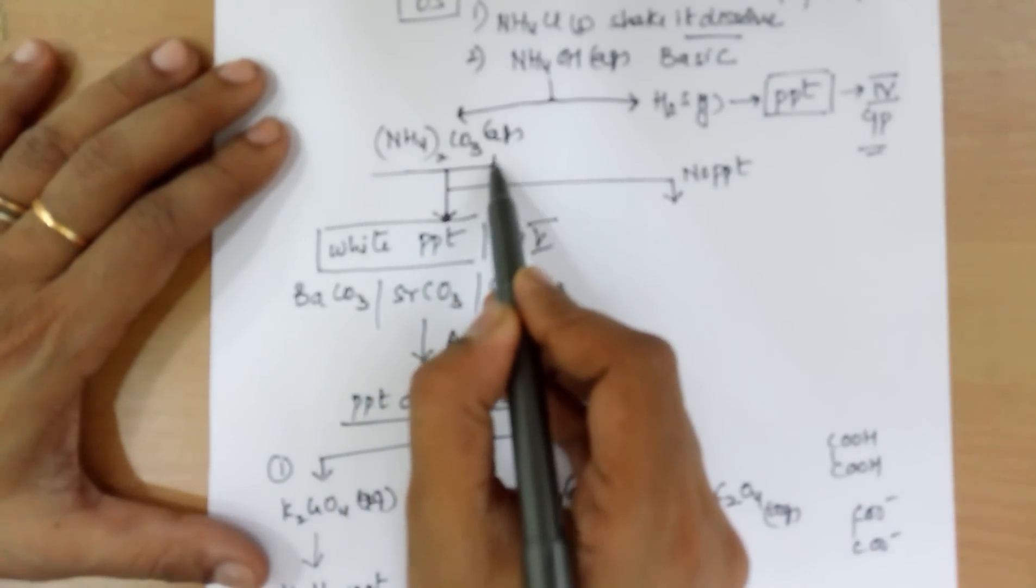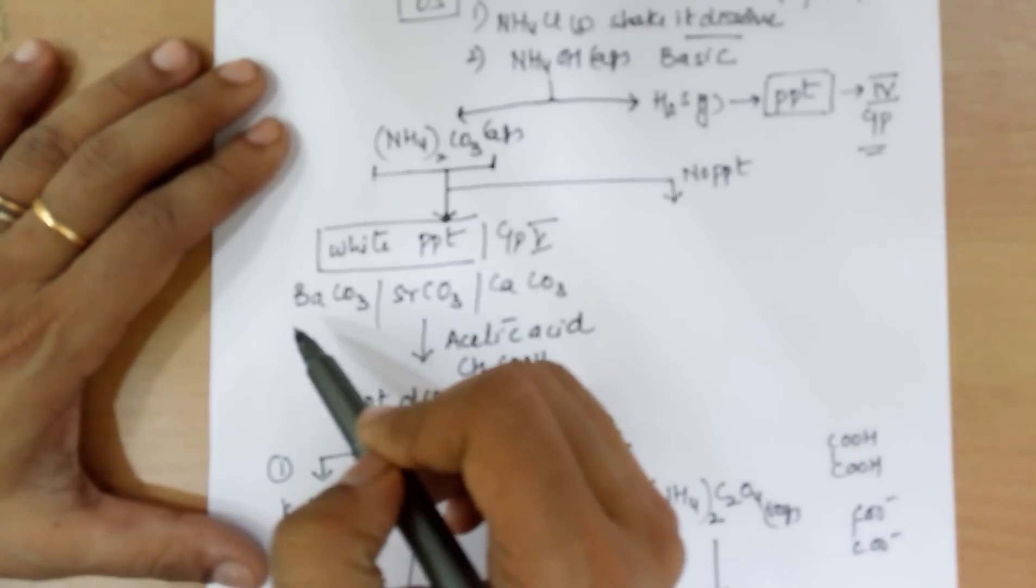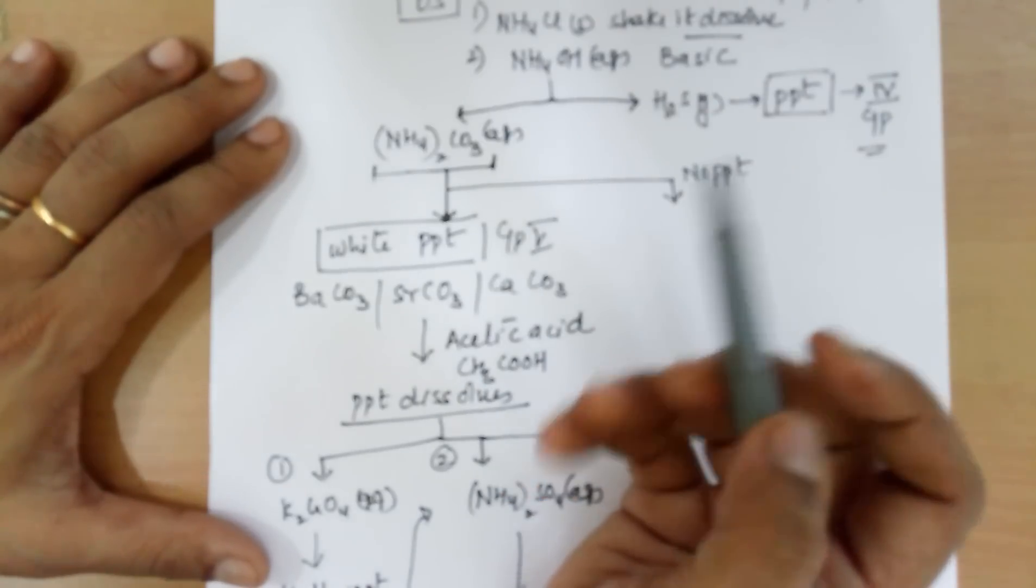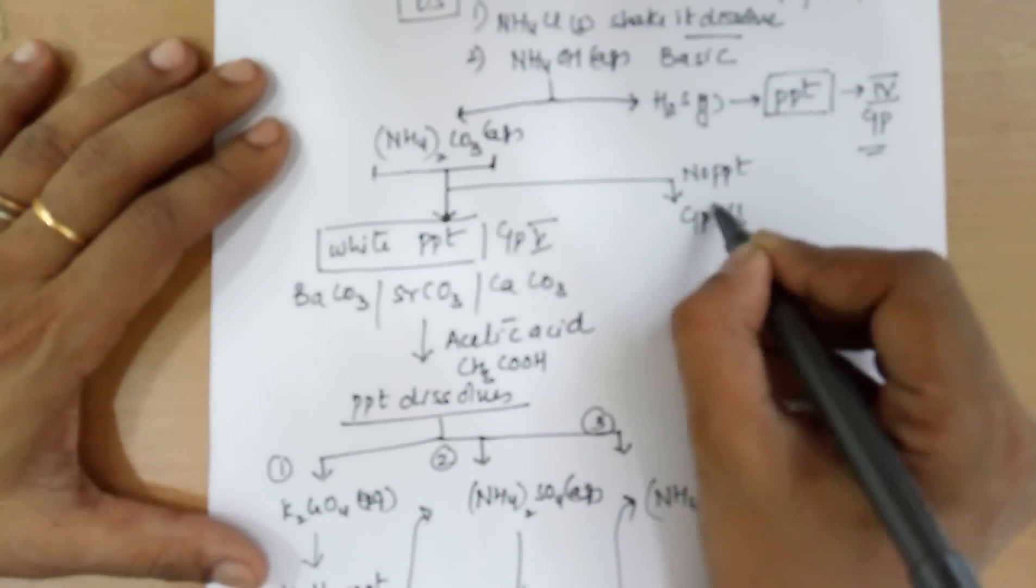But even after adding ammonium carbonate, you don't get a PPT. That means it's not group 5. Then in that case, there is an indication of group 6.